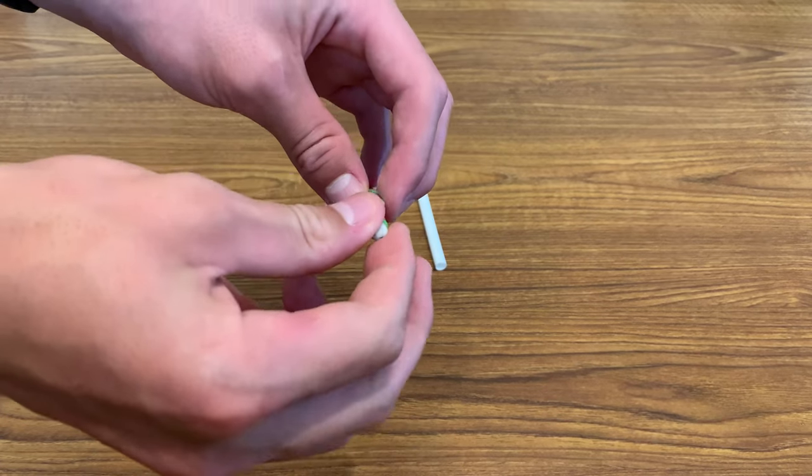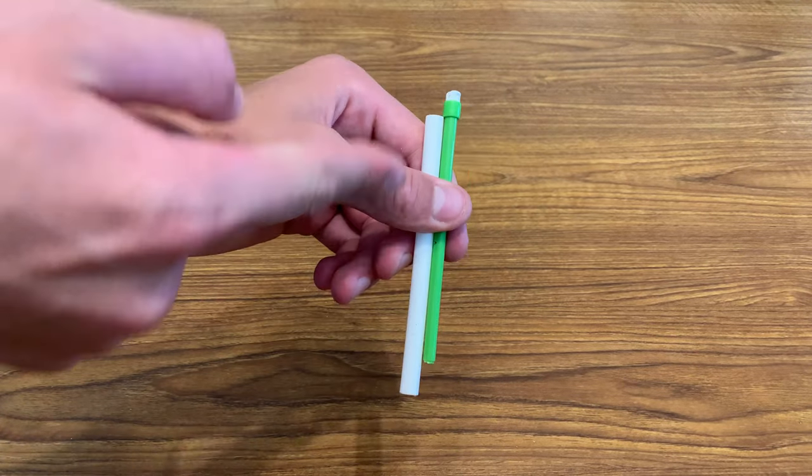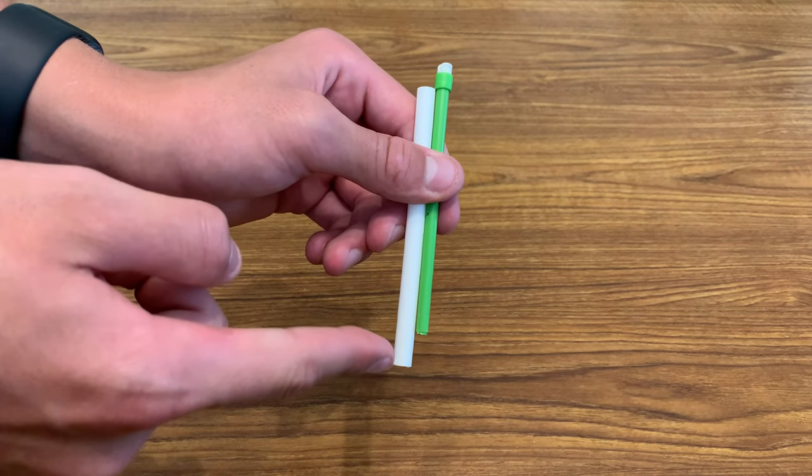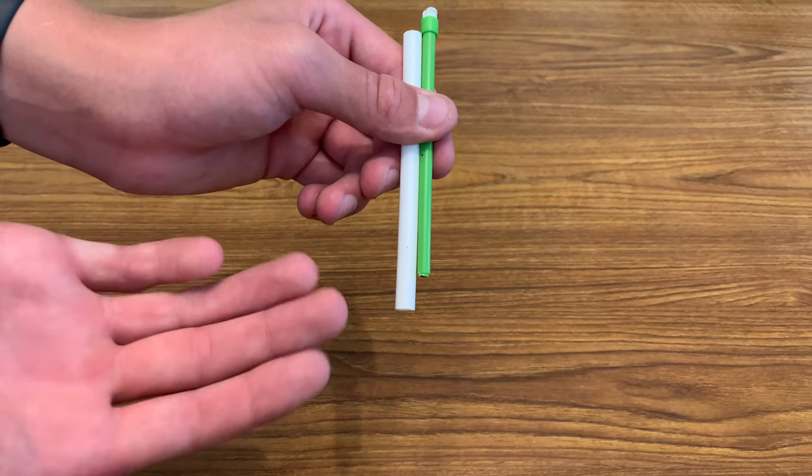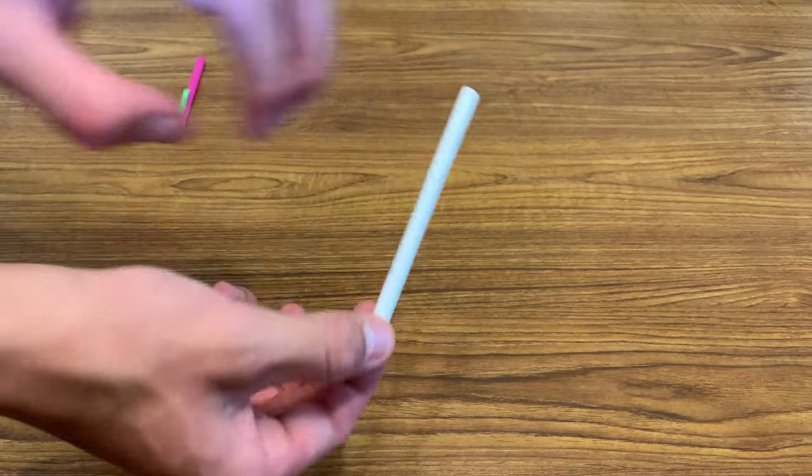Now take the smaller piece connected to the eraser out of the other tube and cut the pen tube to be slightly longer than the stick with the eraser. Mine is already the perfect length so I'll keep it how it is. Then slide the stick into the pen tube like this.